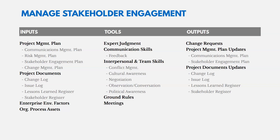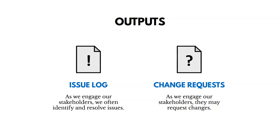As you engage with stakeholders, you need solid communication and interpersonal skills to help resolve issues, especially on sensitive topics. You may also have ground rules. The key outputs are change requests and the issue log. If stakeholders feel things aren't going as planned or they'd like things done differently, they may submit change requests. As we engage with stakeholders, we also identify and resolve issues, updating the issue log accordingly.